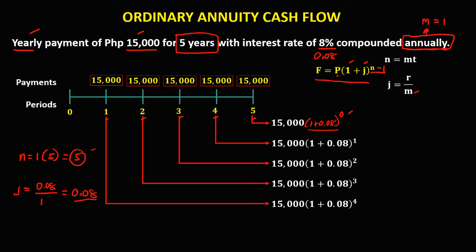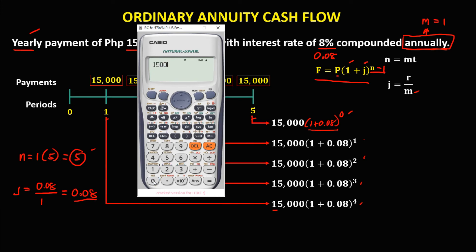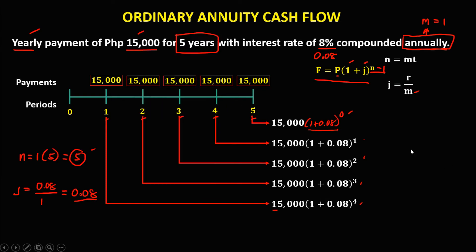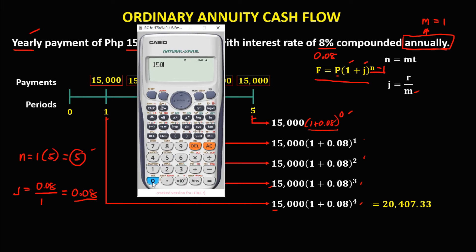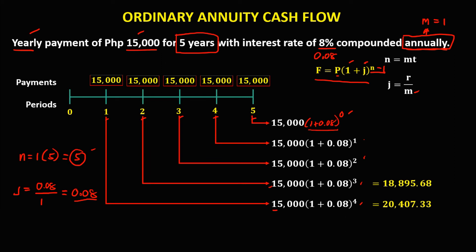To find the future value, we simplify these equations. For year 1: 15,000 pesos times 1.08 to the power of 4 equals 20,407.33. For year 2: 15,000 pesos times 1.08 to the power of 3 equals 18,895.68.